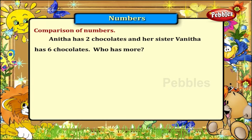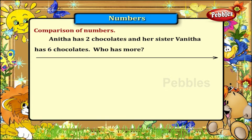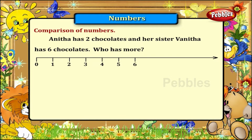The comparison is done like this. Write the numbers from 0 to 10 in order: 0, 1, 2, 3, 4, 5, 6, 7, 8, 9, 10.